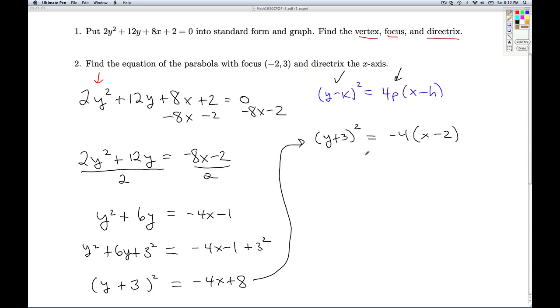So this is the standard form. From this, I can tell what the vertex is going to be. I take the opposite of this number for the x is 2. The opposite of this number for the y is -3. The number here, the -4, corresponds to the number 4p. So this tells me that 4p is -4, which means p is -1.